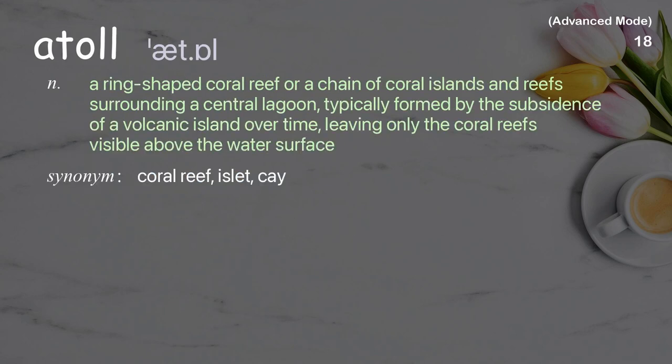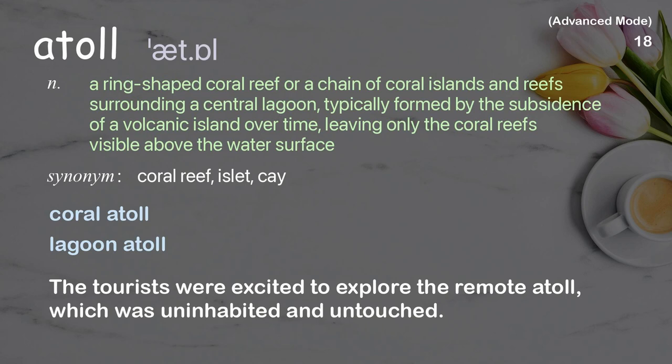Atoll: A ring-shaped coral reef or a chain of coral islands and reefs surrounding a central lagoon, typically formed by the subsidence of a volcanic island over time, leaving only the coral reefs visible above the water surface. Examples: coral atoll, lagoon atoll. The tourists were excited to explore the remote atoll, which was uninhabited and untouched.